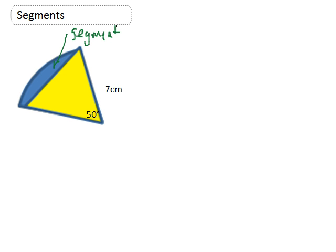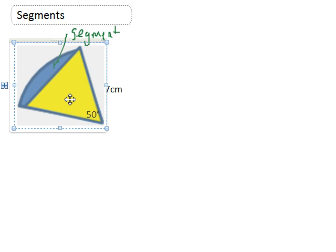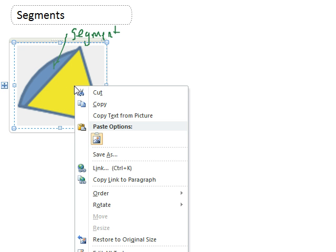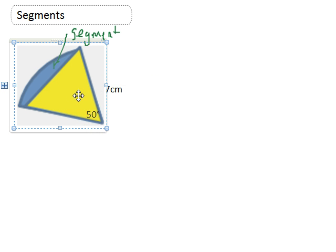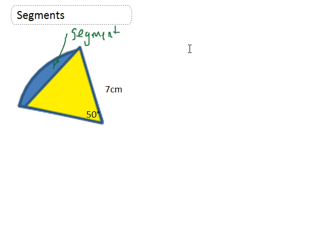It's basically the area of a sector minus the area of a triangle.